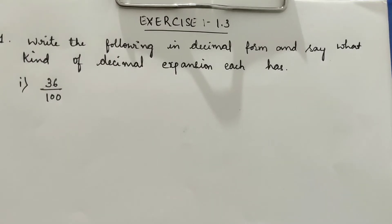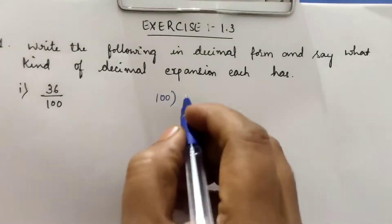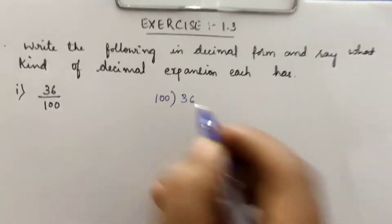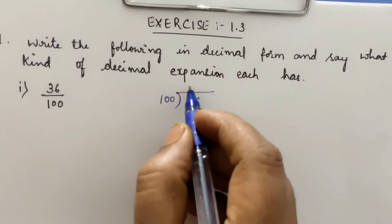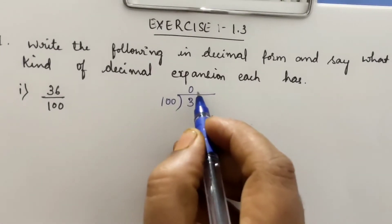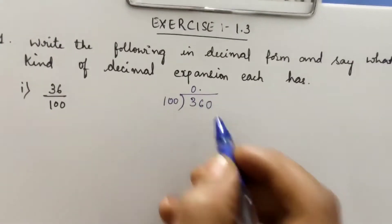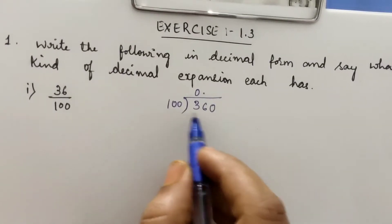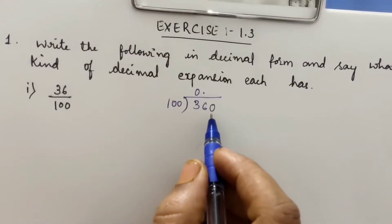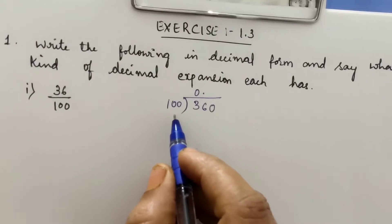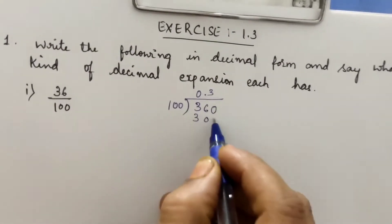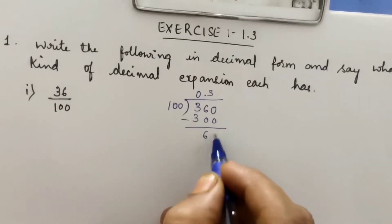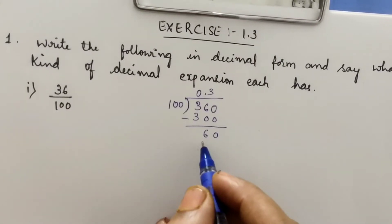The first question is 36 by 100. Divide 36 by 100. It is not possible directly, so put 0 point and take 0 here. In 100, there are 3 digits; in 360, also 3 digits. Now you can easily divide. 100 threes are 300 and you are left with 60. If you subtract, you will get 60.